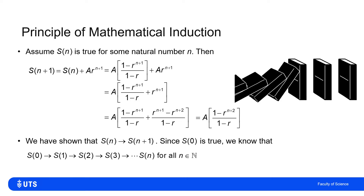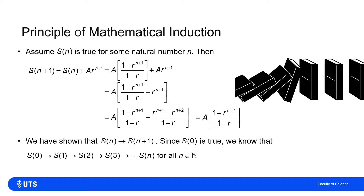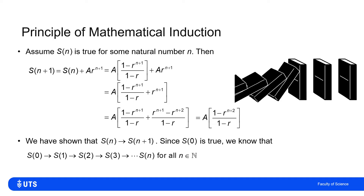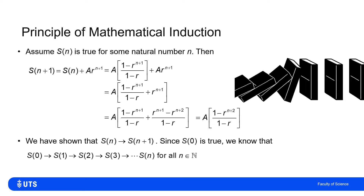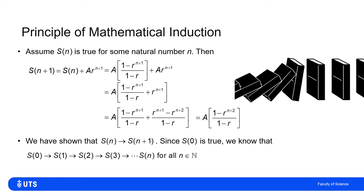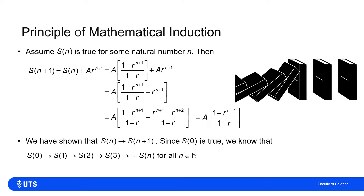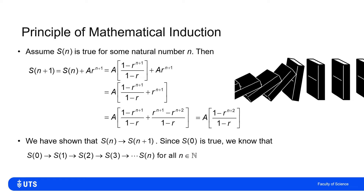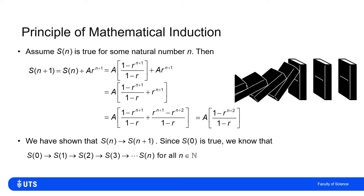In other words, if the statement for S(n) holds, then the statement for S(n+1) holds, therefore S(n+2) holds, therefore S(n+3) holds. Because we knew it was true for the 0th case, that implies it's true for the 1st, which implies it's true for the 2nd. We have established the truth of this statement for the partial sum of the geometric series by induction for all natural numbers n.